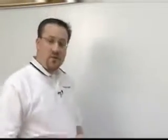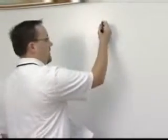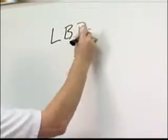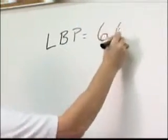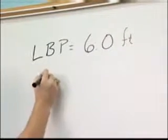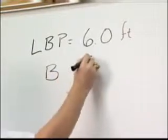Let's go ahead and make an assumption that we have a craft principle dimensions already in mind. Let's assume that your boat has a length between perpendiculars of six feet. Let's assume that it has a beam of one and a half feet.